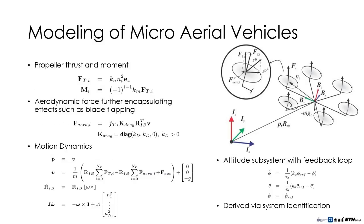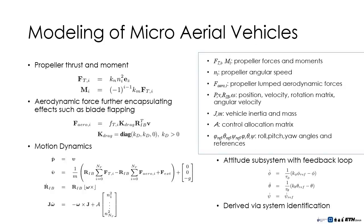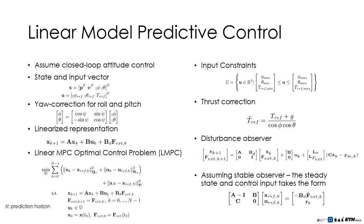Considering a symmetric underactuated hex rotor, or other similar multirotor, the model takes the following form. Two coordinate frames are utilized, namely the inertial frame and the body fixed frame. The key notation involved in the modeling equations is presented in this slide.